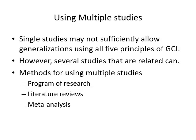Single studies may not sufficiently allow generalization using all five principles of general inference. When we talk about the five principles of general inference, we're asking: can you generalize to different times, different settings, different people, different operations, et cetera? Any single study is going to have limitations in that. So one of the ideas behind a meta-analysis is that if you have multiple studies from multiple time periods, from multiple locations using multiple methodologies, you start to get a bigger picture, especially if all of them keep finding the same effects.